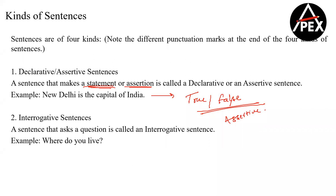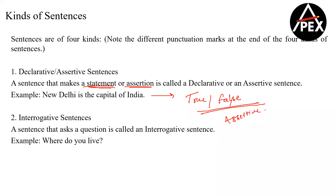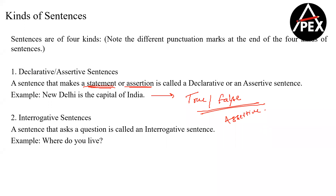For example: 'New Delhi is the capital of India' — that is an assertive statement. If I tell you 'Pradeep is teaching you quant' — that's a false statement, but it's still a statement you're making, so that is also going to be an assertive statement.